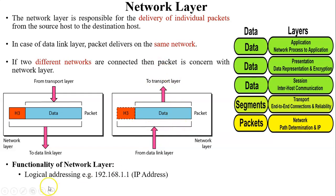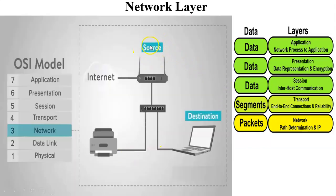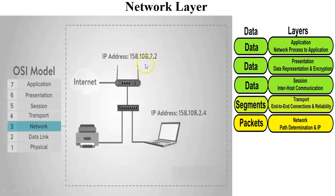The functionalities of the network layer are logical addressing and routing. Logical addressing refers to IP addresses assigned to all PCs across different networks, enabling data transfer between networks. Routing means when data is transferred between two PCs in different networks, the sender decides which path to use. In the animation, you can see source and destination IPs, and the ARP protocol is used to find a MAC address from an IP address.